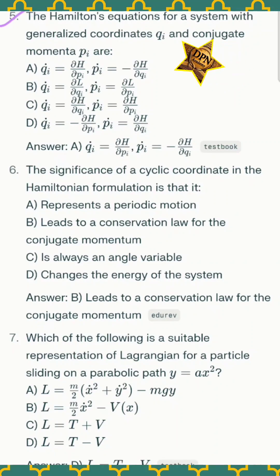Question number five: the Hamiltonian equations for a system with generalized coordinates qi and conjugate momenta pi are - most important, fifth one. The correct option A. This question about the equation of Hamiltonian is repeated.